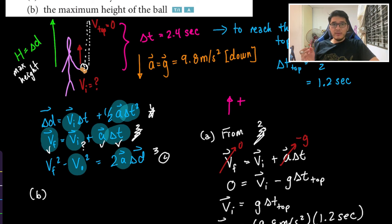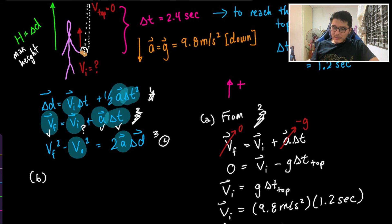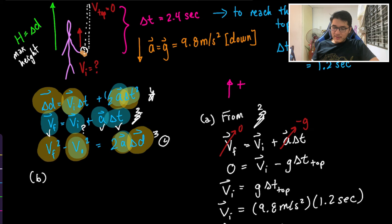For part b we're looking for displacement, since maximum height is a displacement. We'll go back to the formulas — we'd use equation one or equation three. At this point we know the initial velocity, acceleration, and time, and we also know the final velocity. Both equation one and equation three will give the right answer.